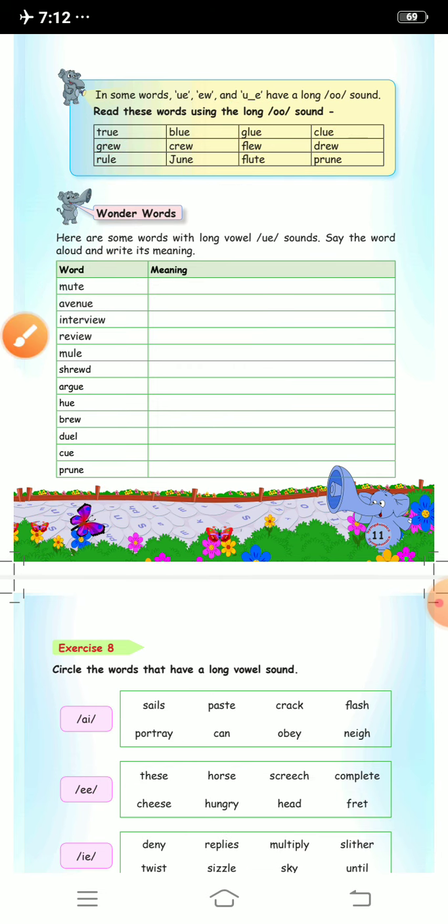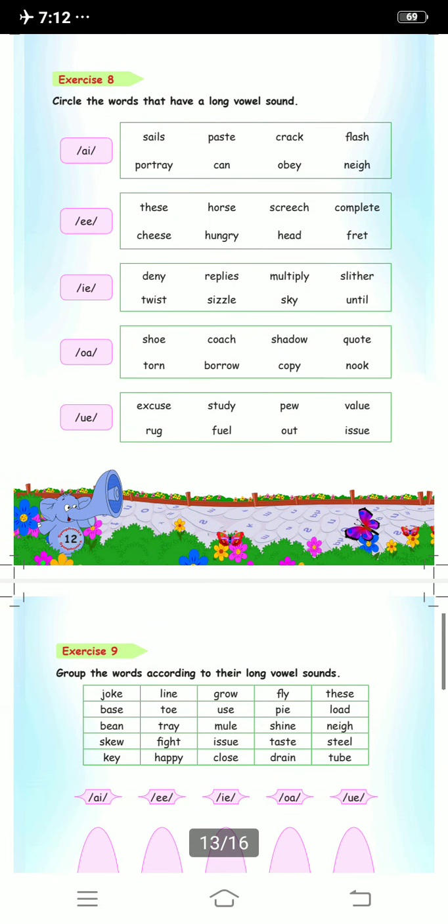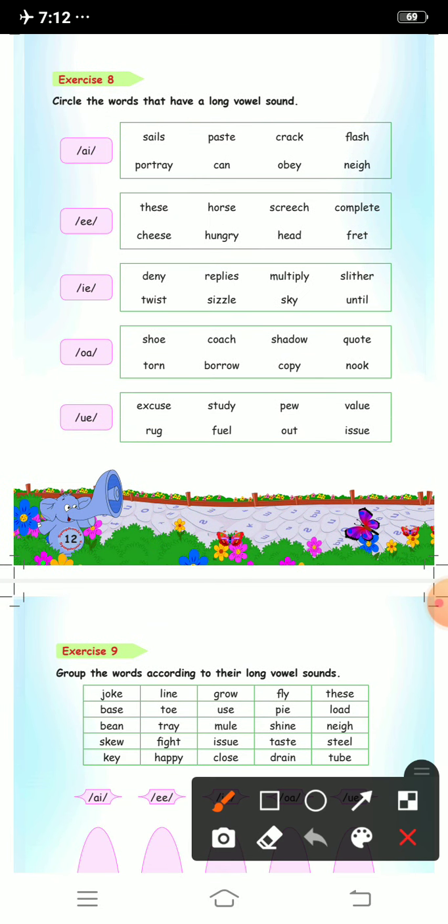Now we will move towards exercise 8. In this you have to circle the words that have a long vowel sound. First is long a sound. The spelling is ai but the sound is a. So sail, you will circle this word. Then paste, yes.